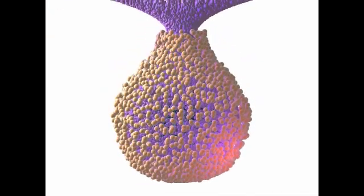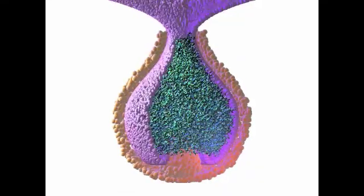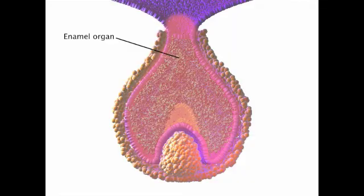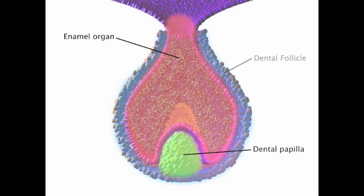Several structures can be identified during the cap stage. The enamel organ is the part of the developing tooth made up of epithelial cells originating from the dental lamina. The dental papilla makes up the ectomesenchymal cells filling the concavity of the cap. Lastly, the dental follicle makes up the ectomesenchymal cells enclosing the rest of the enamel organ.